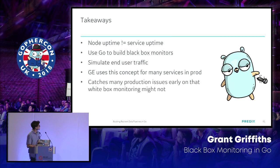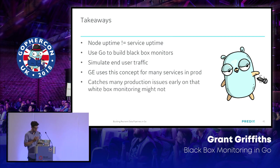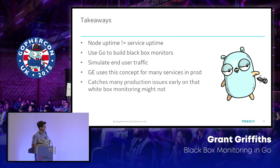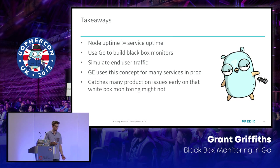Key takeaways: node uptime isn't service uptime — just because all your nodes are up doesn't mean your service is in a usable state. You can use Go to build black box monitors that simulate end users. We use this concept for all our production services and the model has worked really well. The monitoring and diagnostics probe was written about two and a half years ago and has probably caught dozens of production issues — it's great that those are caught by the probe first rather than the end user coming to us saying 'why can't I see my data?'